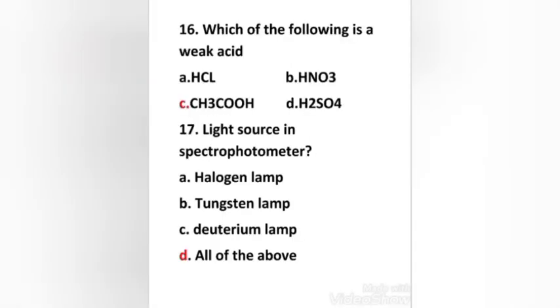Right answer is option C: acetic acid. Light source in spectrophotometer: halogen lamp, tungsten lamp, deuterium lamp, all of the above. Right answer is option D: all of the above.